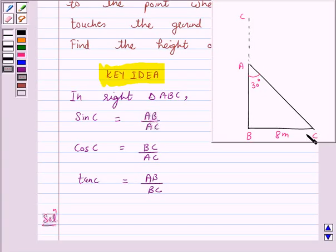Here, BC represents a tree which breaks and the broken part AC bends so that the top of the tree C touches the ground making an angle 30 degrees with it.